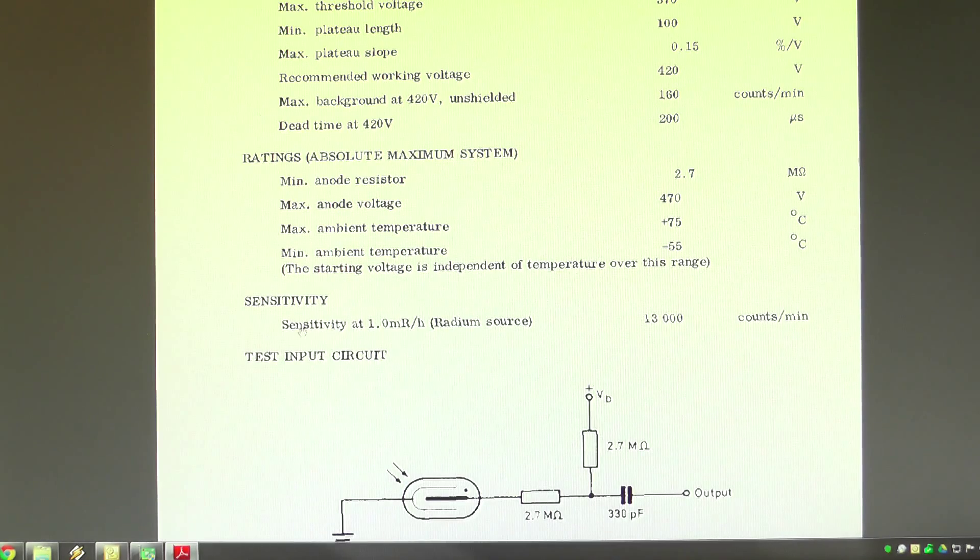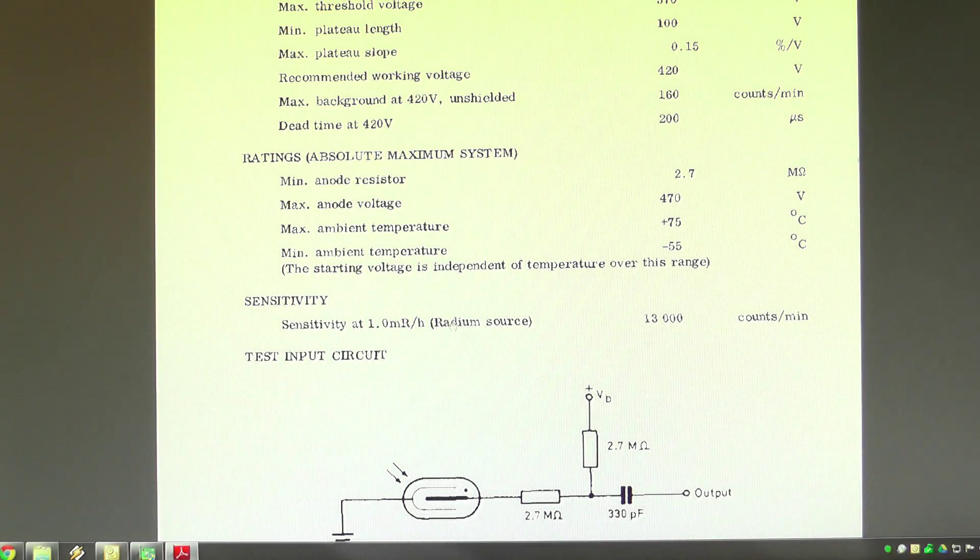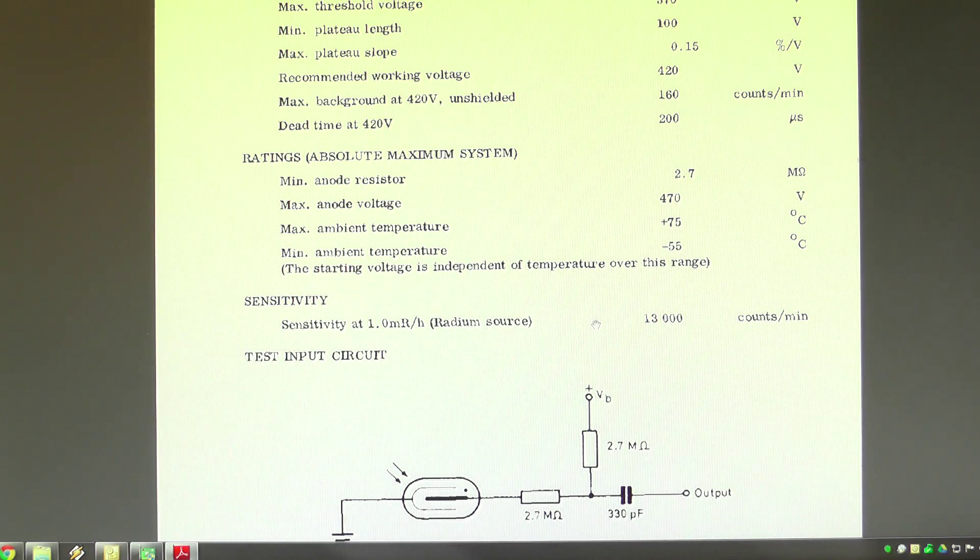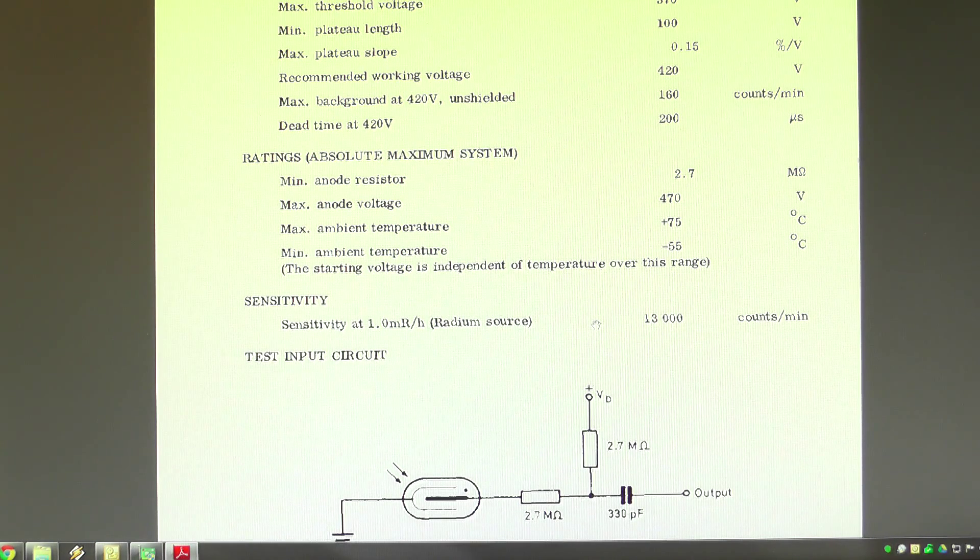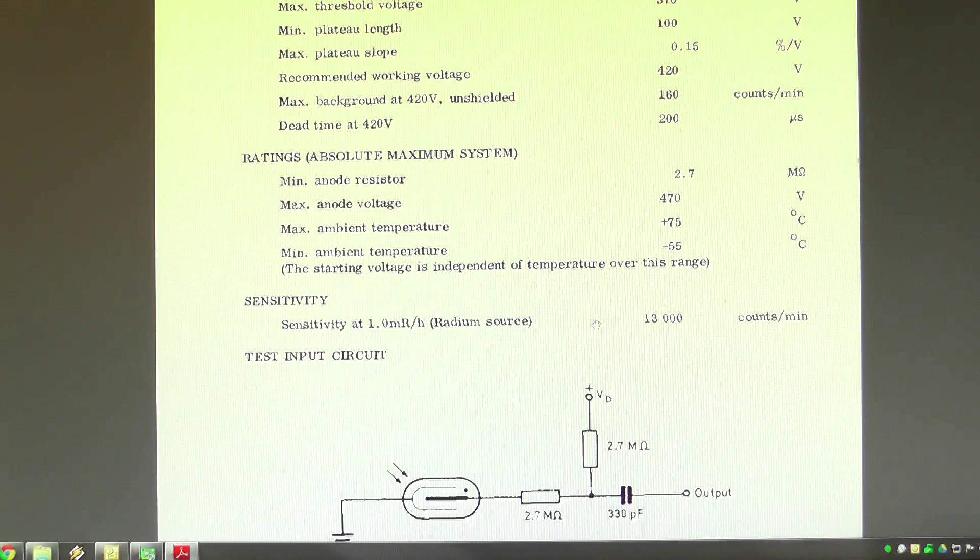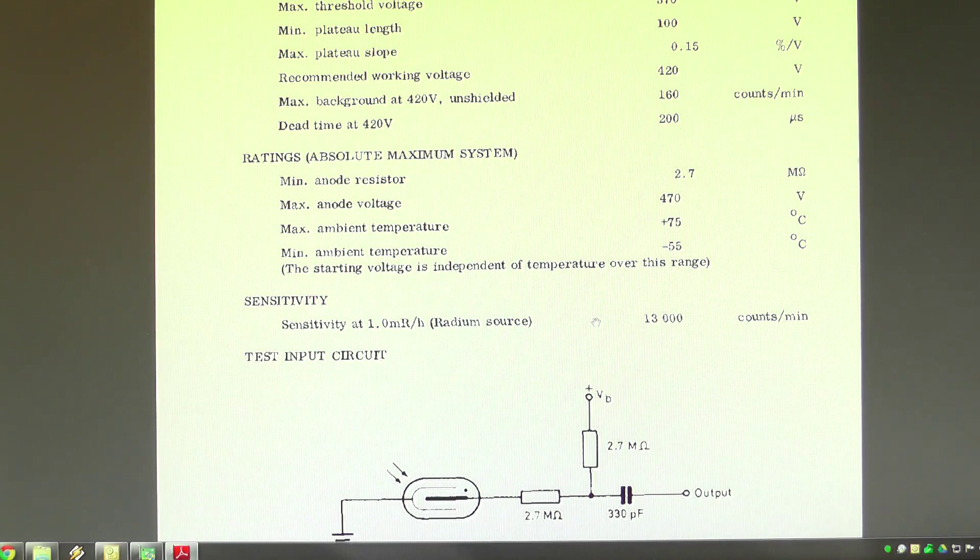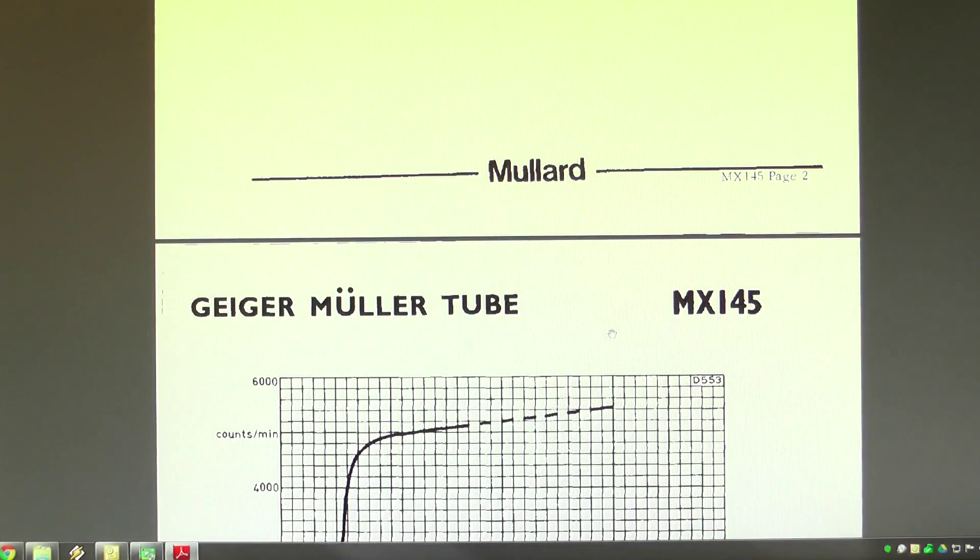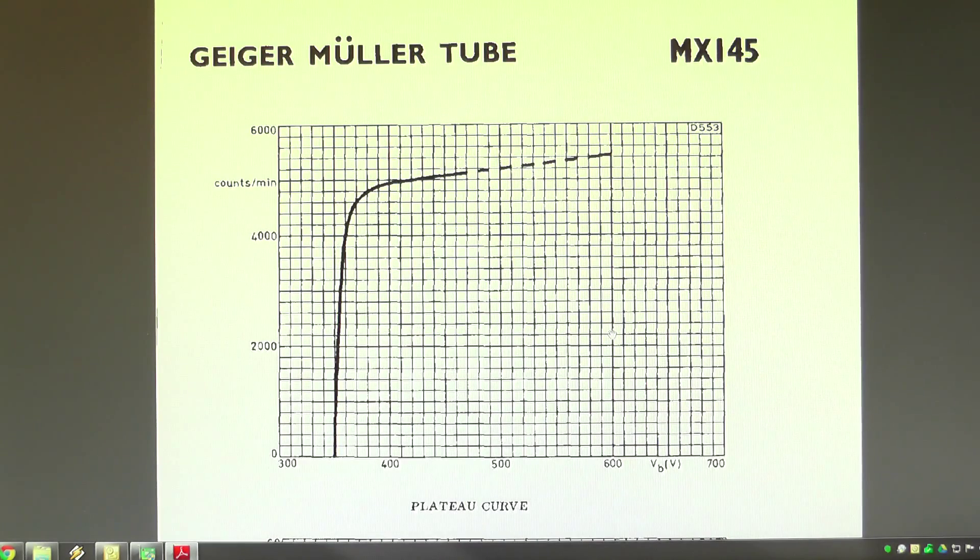So we've got sensitivity against a radium source. Now unfortunately I don't have any sources that are in any way calibrated. So there's still a bit of an unknown quantity with this tube. I think it is working absolutely fine but it's always hard to know about these things sometimes.